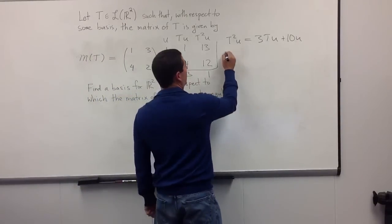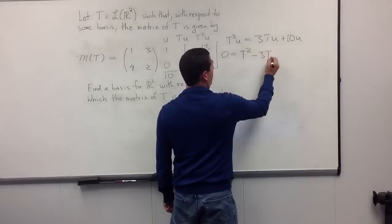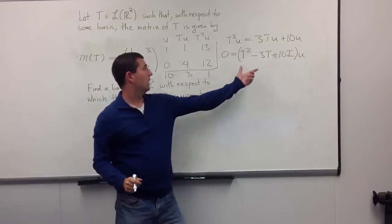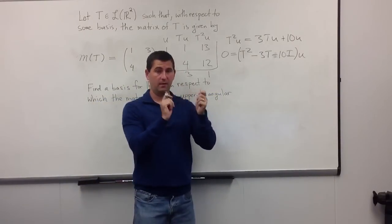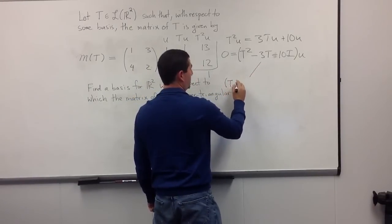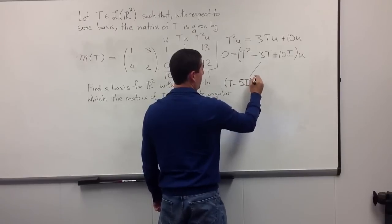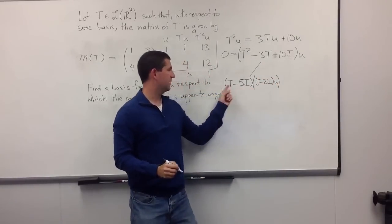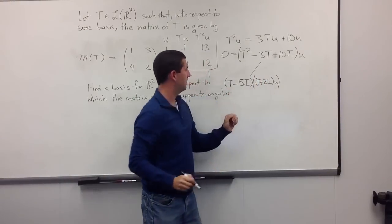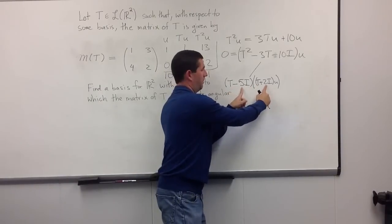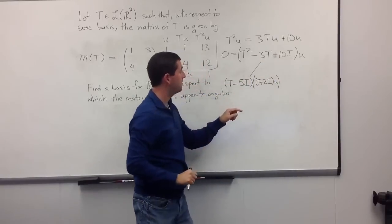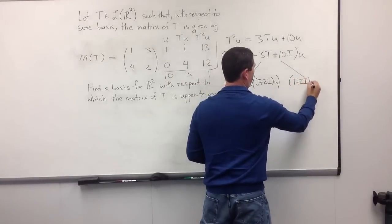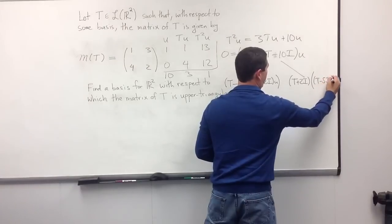Putting everything on one side, that tells me that 0 equals T² − 3T − 10I applied to u. I can factor this in a couple of ways. One way is as (T − 5I)(T + 2I) applied to u. If you multiply that out, you get T² − 3T − 10I. Of course, I could also swap the order: (T + 2I)(T − 5I) applied to u.